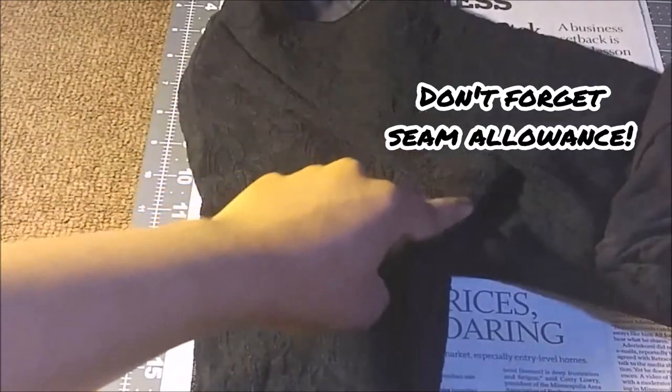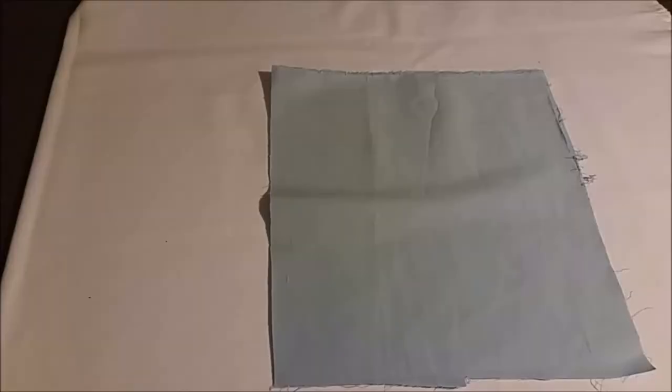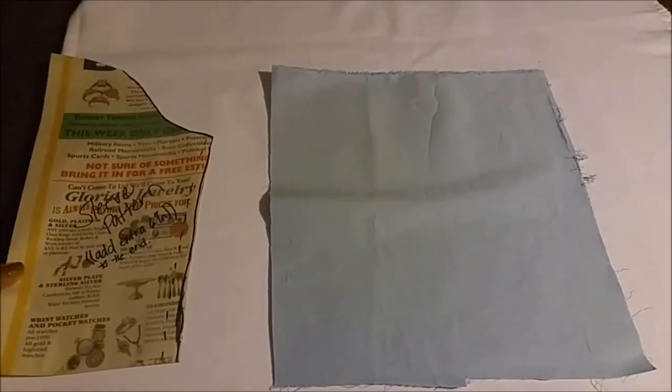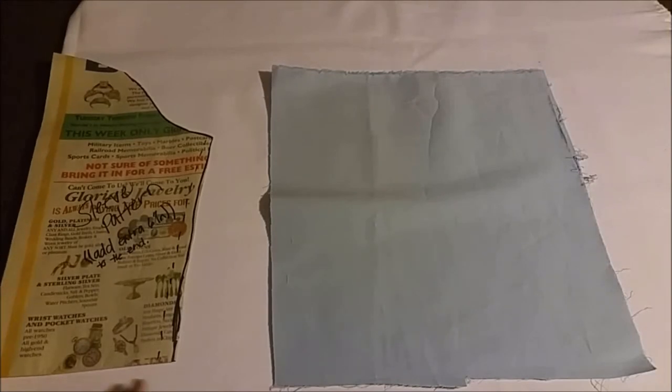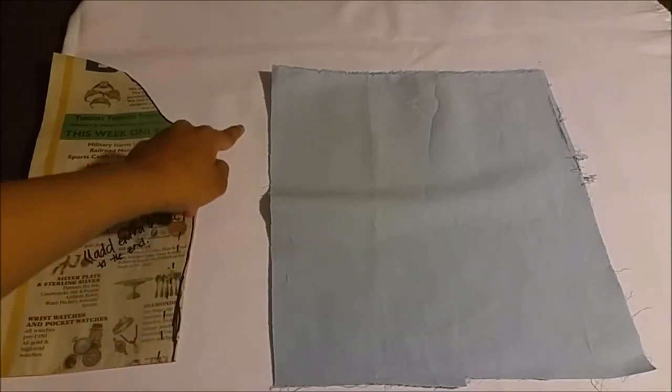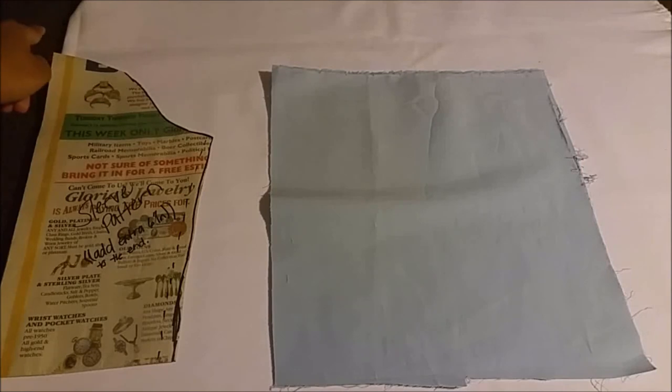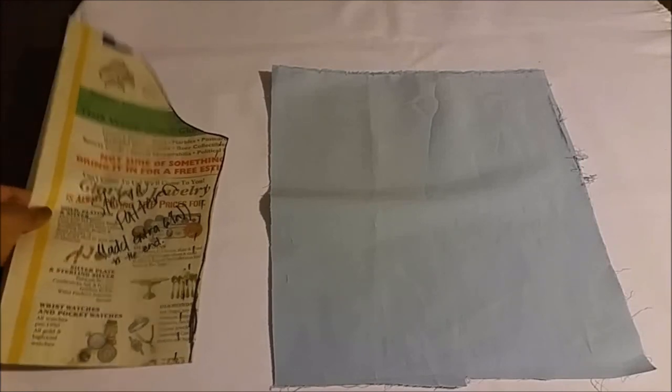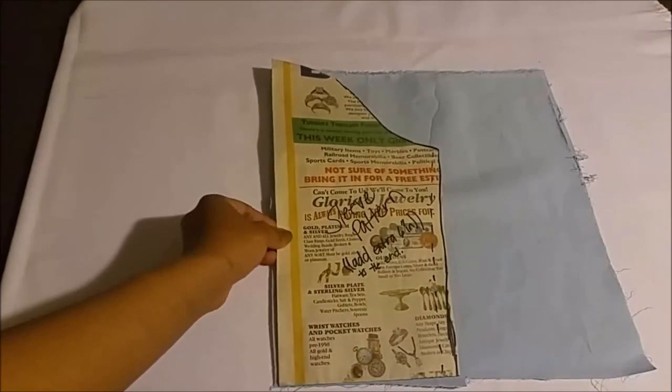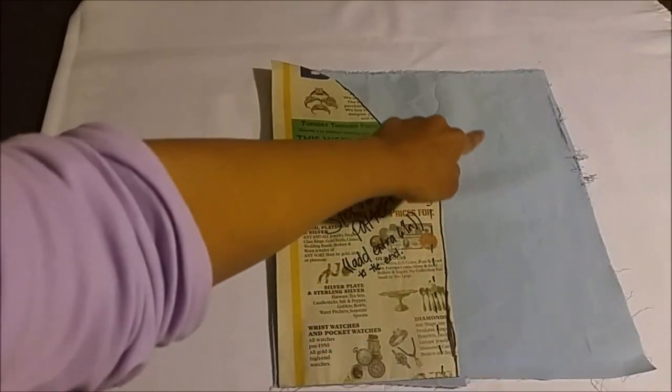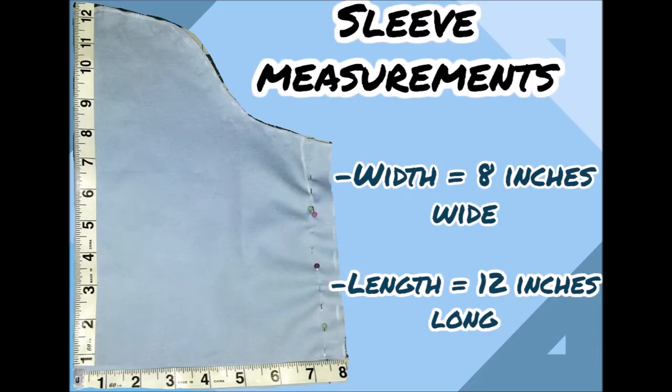Trace the sleeve onto the newspaper to make your pattern. Place the sleeve pattern on the fold of the fabric and cut. Do this twice. The width of the sleeve is 8 inches wide. The length is 12 inches long plus seam allowance.